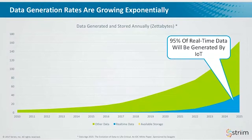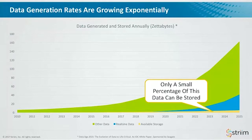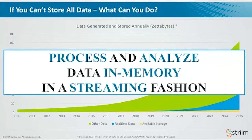Here's the kicker: you have all of this data being generated, but that thin yellow line is the available storage. Only a small percentage of all the data being generated can ever be stored. There's literally physically not enough hard drives, flash drives, magnetic tape, or newfangled crystal structures to store all of the data that's being generated. So if you can't store all of the data — in fact, if you can only store a small fraction of it — you're left with the conclusion that you have to process and analyze the data in memory before it ever hits disk, before it ever hits storage, in a streaming fashion.